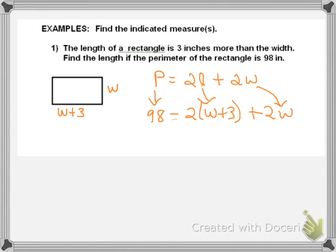Now, I'm going to solve this equation using the steps that we already know how to do. Distributive property here. Take care of that parenthesis, so I get 98 equals 2W plus 6 plus 2W. Now, I add my like terms, which is 2W plus 2W, which gives me 4W plus 6.